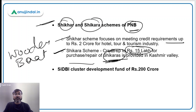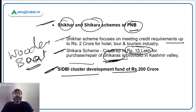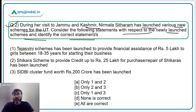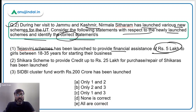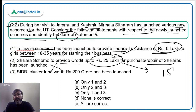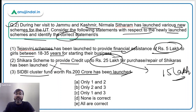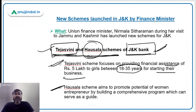A Siddi Cluster Development Fund worth Rs. 200 crores was also launched during Nirmala Sitharaman's visit to Jammu and Kashmir. Coming to the answer: the Tejasvini/Hausla scheme provides financial assistance of Rs. 5 lakh to girls between 18–35 — correct. The Shikara scheme credit amount is Rs. 15 lakh, not Rs. 25 lakh — that is incorrect. The Siddi cluster fund of Rs. 200 crore is correct. Therefore, the first and third statements are correct — Option C is the correct answer.